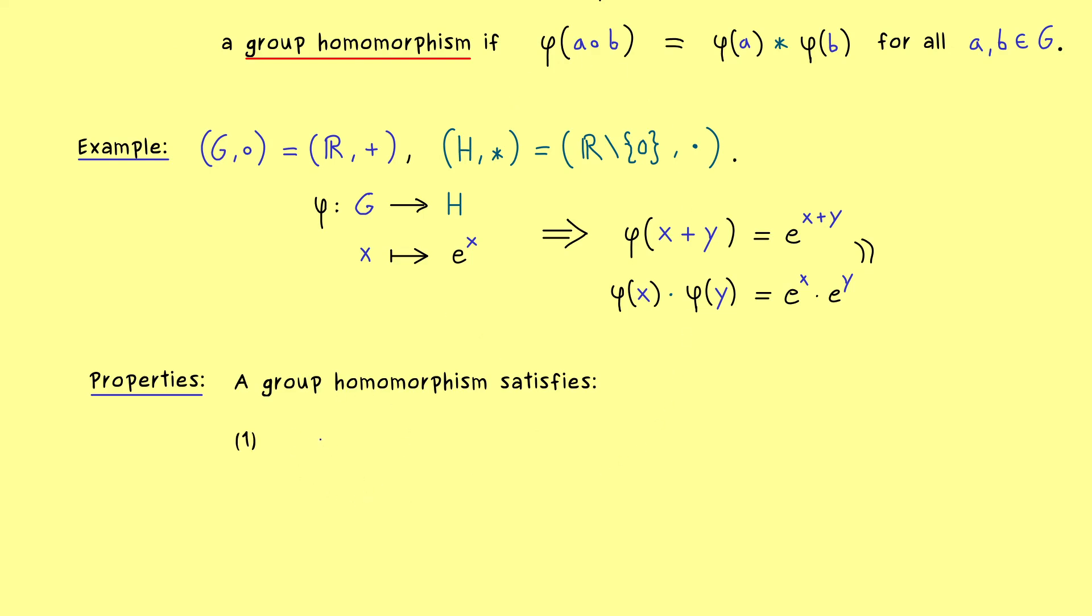So the first one is, if we take the neutral element in G, and let's call it e_G, and put it into φ, we get the unique neutral element in H. So this property we can remember as the identity is sent to the identity.